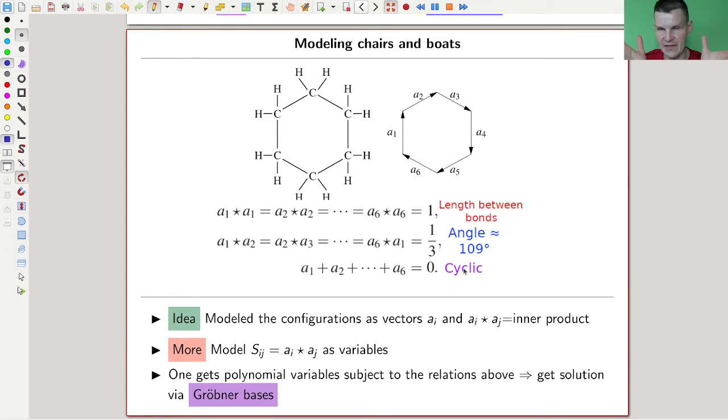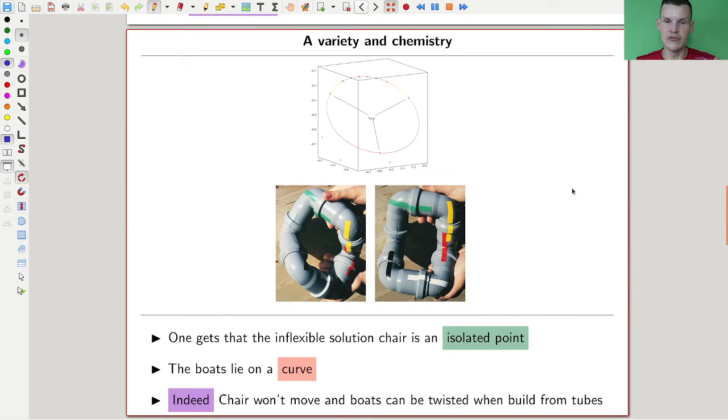This says that one of them is a unique solution to something like a point in a space, and the other one is more like a continuous solution. You're a chemist and you observe this in your experiments, and you would like to verify that mathematically. This is where computer algebra came into the game. They modeled everything as a configuration of vectors, and then you had variables that are supposed to satisfy certain equations. It's a bunch of polynomial variables that satisfy polynomial type of equations.